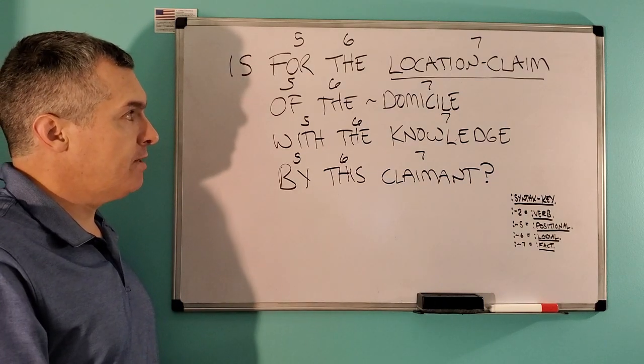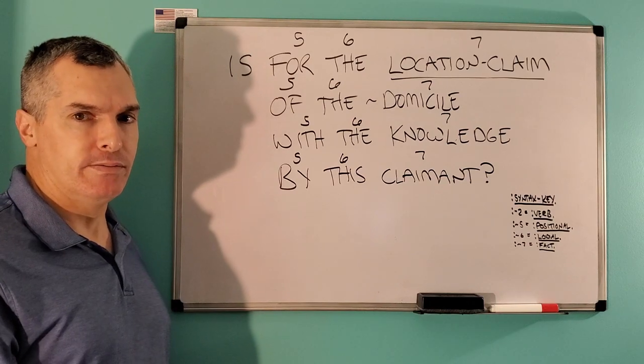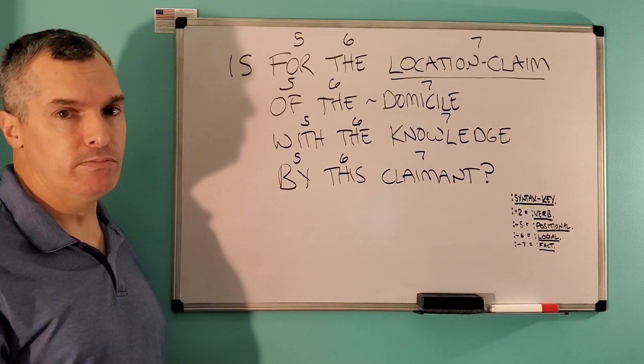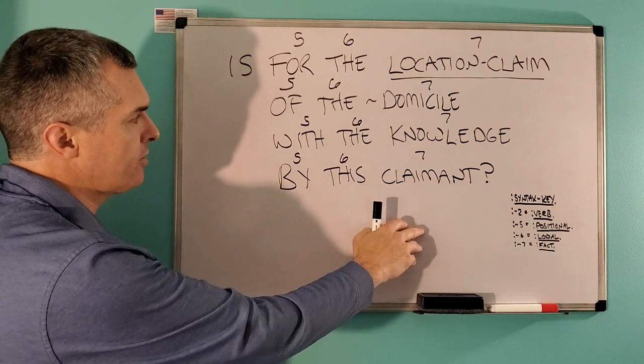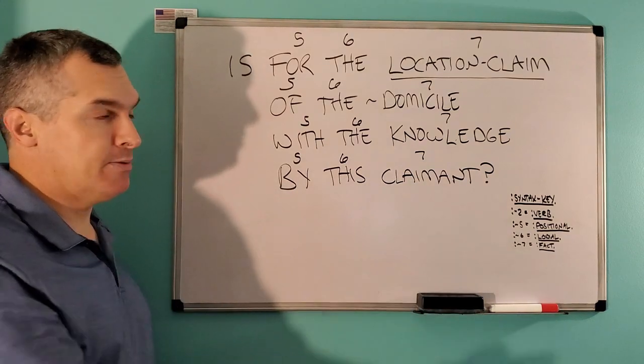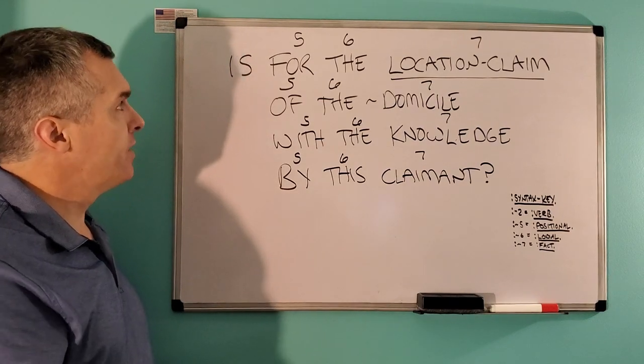Is, for the location claim of the domicile with the knowledge by this claimant? Are you home? Backwards? Is, for this claimant of the knowledge with the domicile by the location claim? And, that's how you would do it.